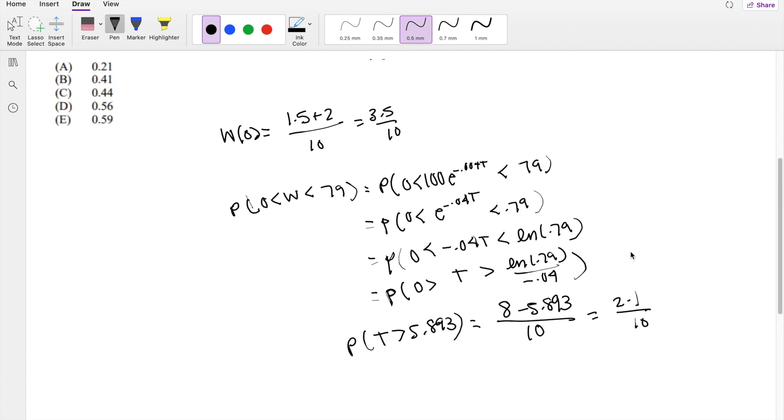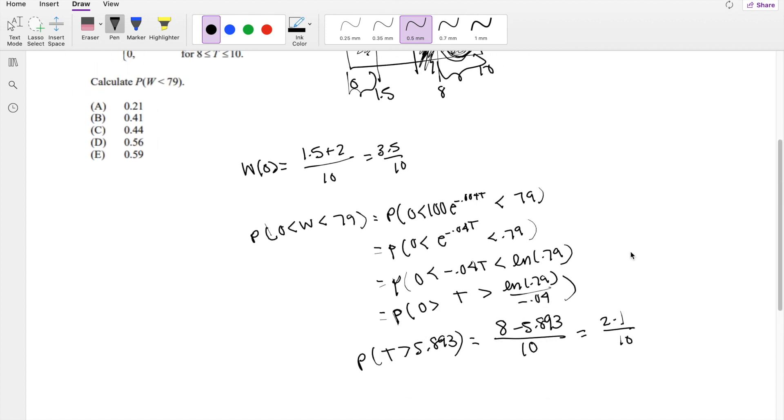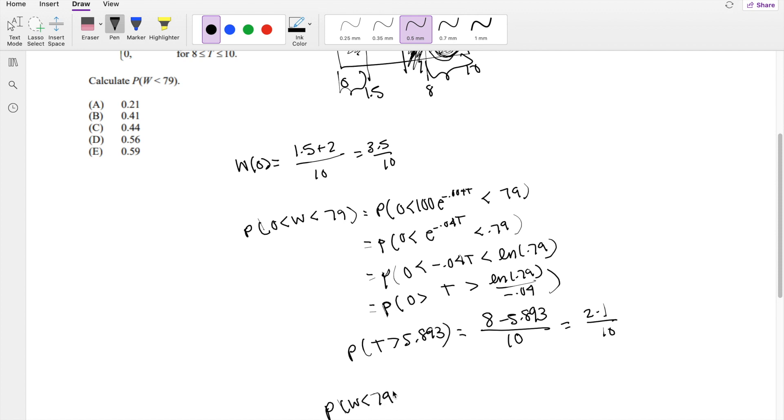All I have to do to find the probability that W is less than 79 is add those two numbers. 3.5 over 10 plus 2.1 over 10 equals 5.6 over 10, or 0.56, which is answer D.